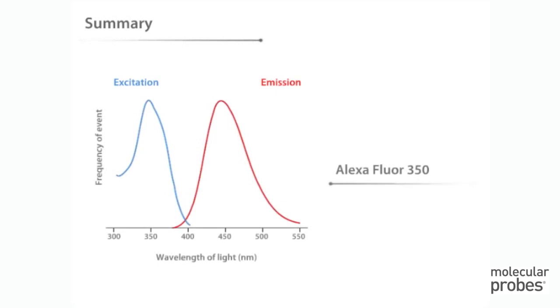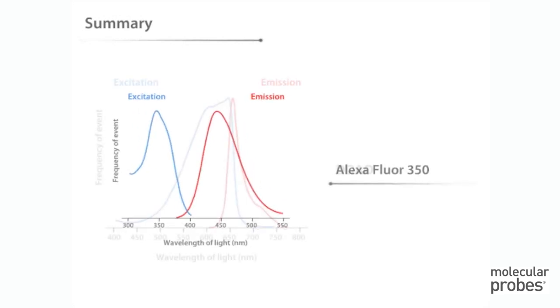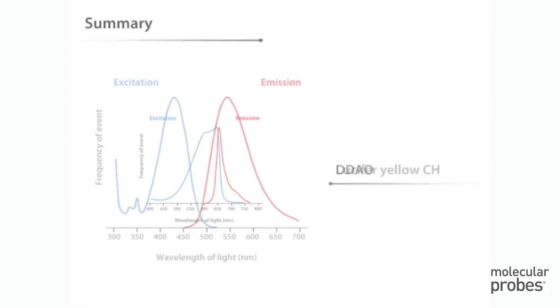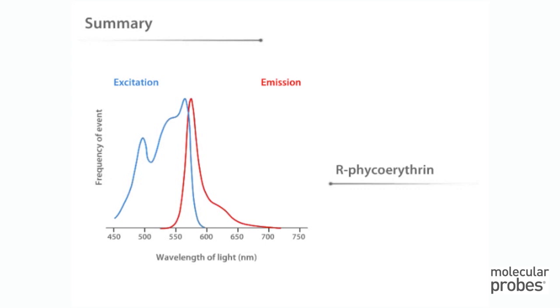In summary, the excitation and emission spectra of a fluorophore contain important practical information about what wavelengths of light we need to supply and detect in order to use that fluorophore effectively.